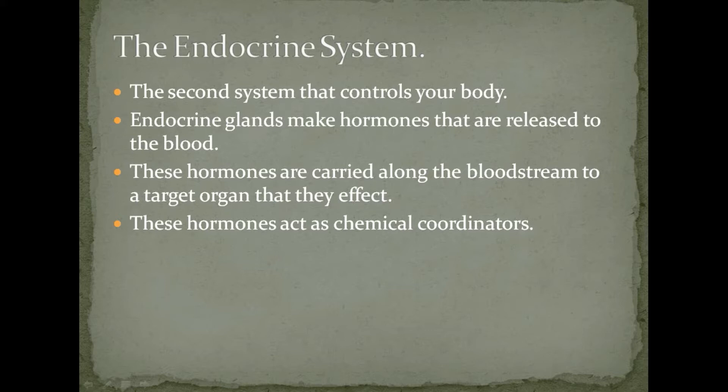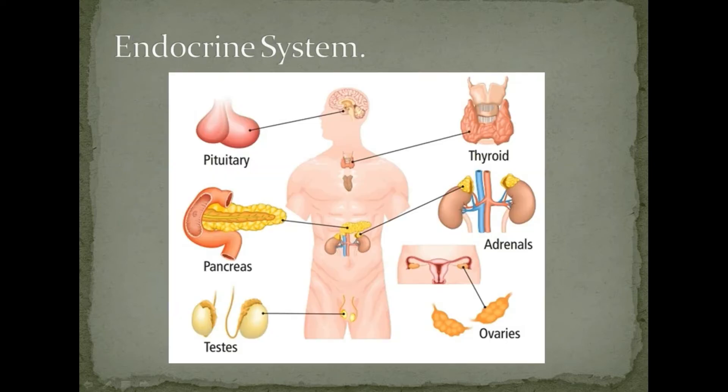The endocrine system is the second system that controls your body — you can control the internal environment of your body with it. Endocrine glands make hormones that are released into the blood. These hormones are carried along the bloodstream to a target organ that they affect, acting as chemical coordinators.